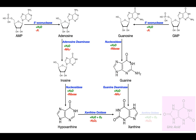Finally, xanthine can be converted into uric acid by the action of xanthine oxidase. Xanthine oxidase again uses water and molecular oxygen to perform the oxidation, adding a carbonyl on the carbon between the two nitrogens of the five-membered ring. Uric acid has been flipped back to the original conformation shown for the earlier molecules.